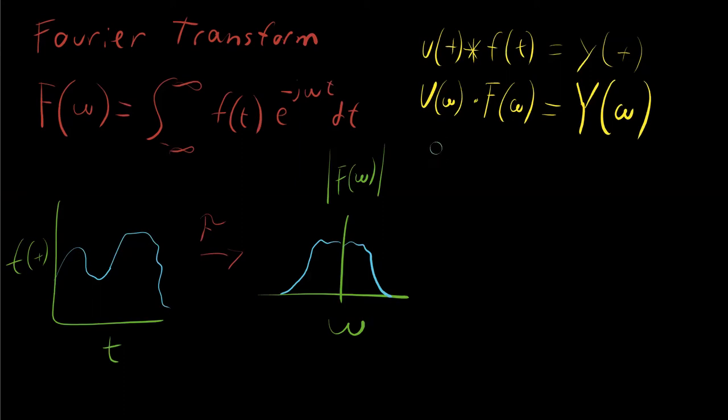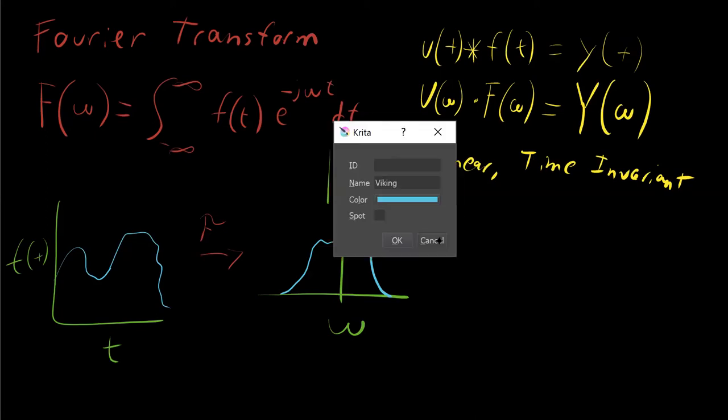It is linear, it is time invariant, which is great. And a lot of the basic mappings work out as well. The Fourier transform of one is just the delta function.